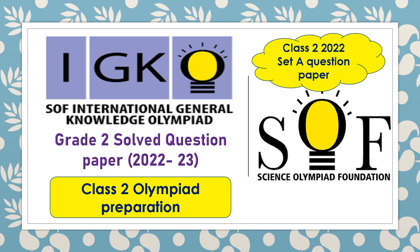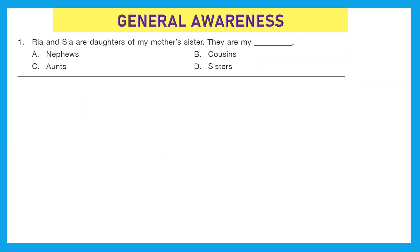Hello everyone! As we all know, olympiads are approaching and we really need to prepare for all those olympiad examinations. Today I am going to solve with you the Class 2 question paper of IGKO — that is International General Knowledge Olympiad — the question paper of last year. The Grade 2 General Knowledge Olympiad examination is divided into four sections: General Awareness, Current Affairs, Life Skills, and the Achiever Section.